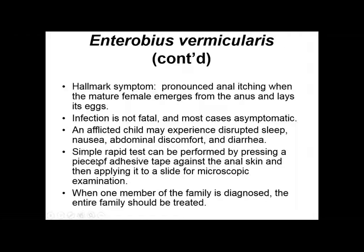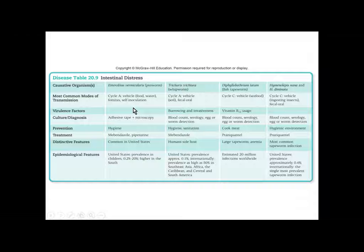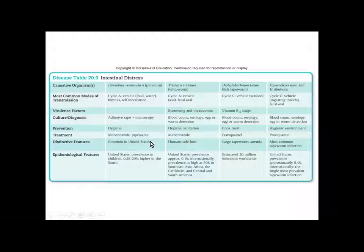A rapid test involves pressing adhesive tape against the anal opening and applying it to a slide for microscopic examination, to pick up and identify any eggs. If one person in the family is diagnosed with this helminth, the entire family should receive treatment because it spreads readily within a family unit. Pinworm is prevented with good oral hygiene and handwashing. It's very common in the United States and has a higher prevalence in the southern U.S. Treatment involves two general anti-helminthic drugs.